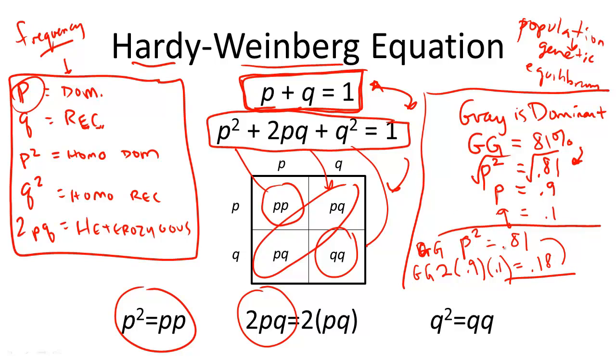So total up 0.81 plus 0.18, and your answer is 0.99. Or, what's that in percent? 99% of the population has gray fur color. There's your answer.